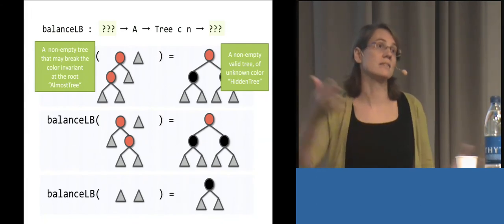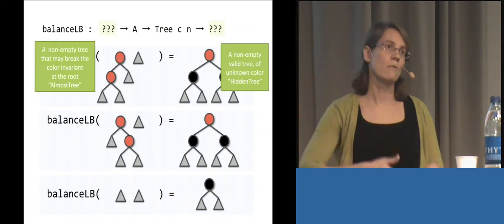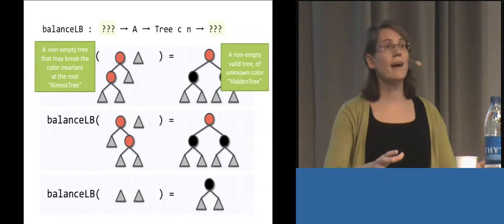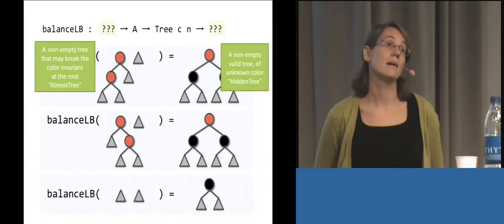And we've seen it, right? Type classes going into Agda and Coq. That's an example of where things that really work out nicely in Haskell go to other dependently typed languages.